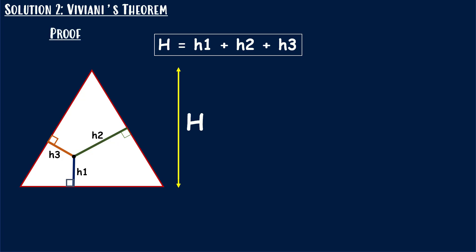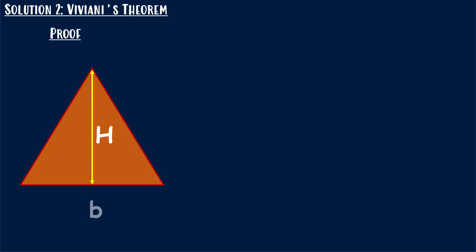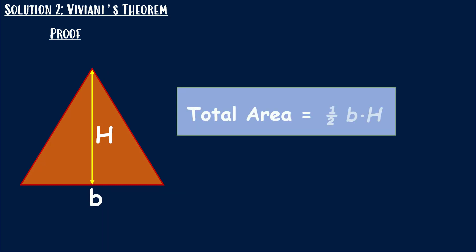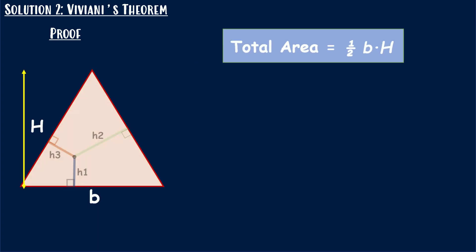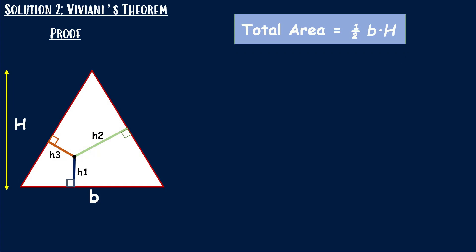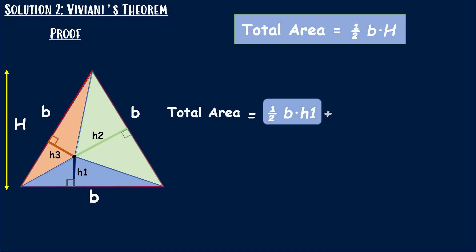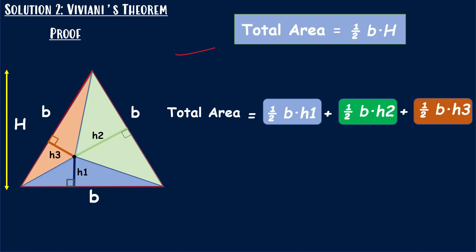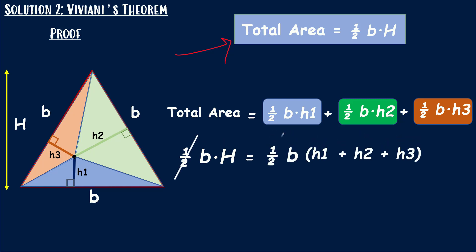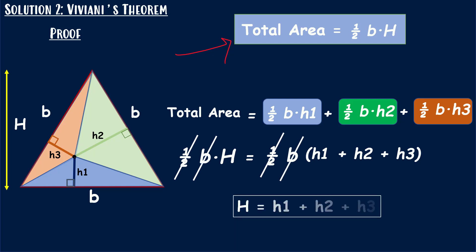Before we use it to solve our problem, let's quickly prove this equation. Consider B as the base of the equilateral triangle, so its area is one-half times base times height H. Now split the triangle into three smaller triangles from the interior point, with heights h1, h2, and h3, each sharing the same base B. The total area of the larger triangle equals the sum of the three smaller triangle areas. Simplifying, the common terms cancel, and we get H equals h1 plus h2 plus h3. That proves Viviani's theorem.